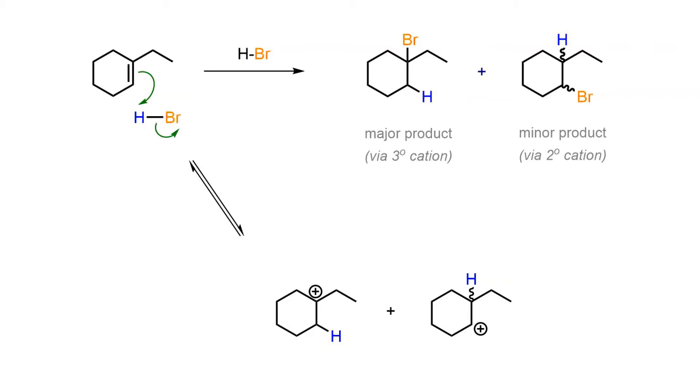The tertiary pathway will be preferred due to significant electron donation from the nine adjacent beta bonds in the form of hyperconjugation. This selectivity is referred to as Markovnikov addition, in which the major product will arise via the most stabilized carbocation intermediate.